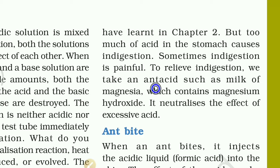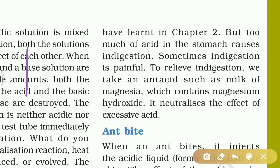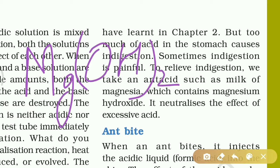An antacid is a product that can neutralize the excess acid, such as milk of magnesia. Our example is milk of magnesia, whose formula is Mg(OH)₂ — magnesium hydroxide. It neutralizes the effect of excessive acid in the stomach.